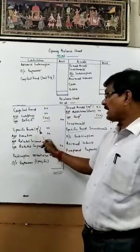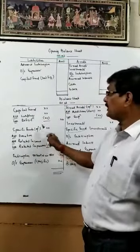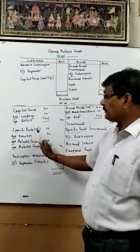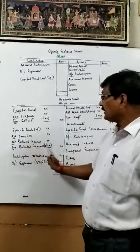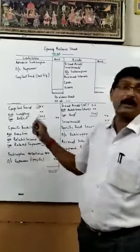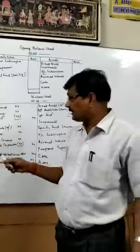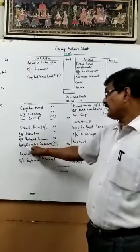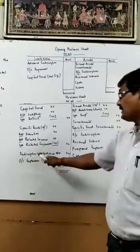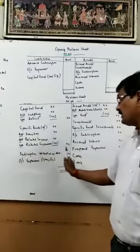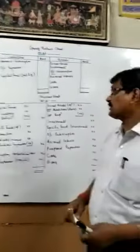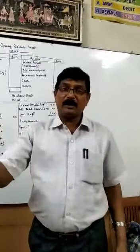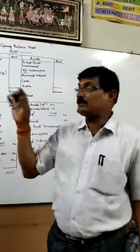Then specific funds: take the opening balance, add donations for that specific fund, add related income against that specific fund, and deduct related expenses. Then add subscription received in advance and outstanding expenses — such as outstanding salary, outstanding rent, and other outstanding expenses.